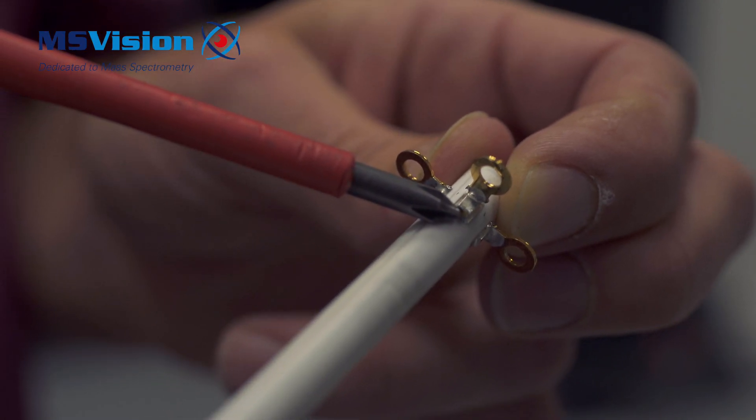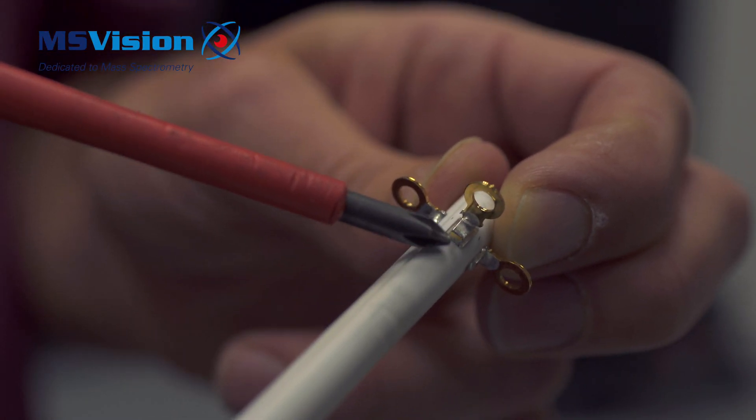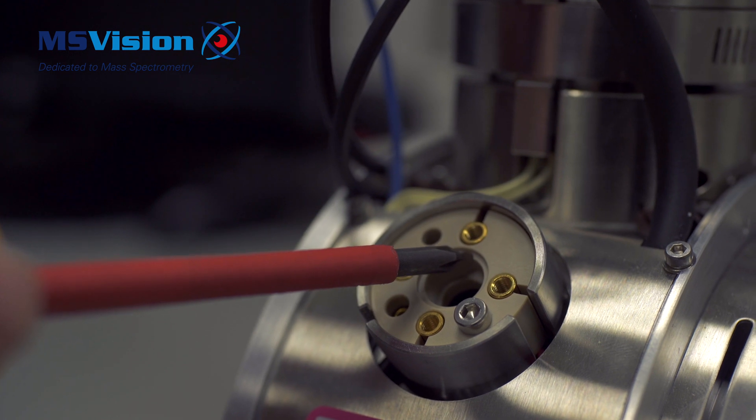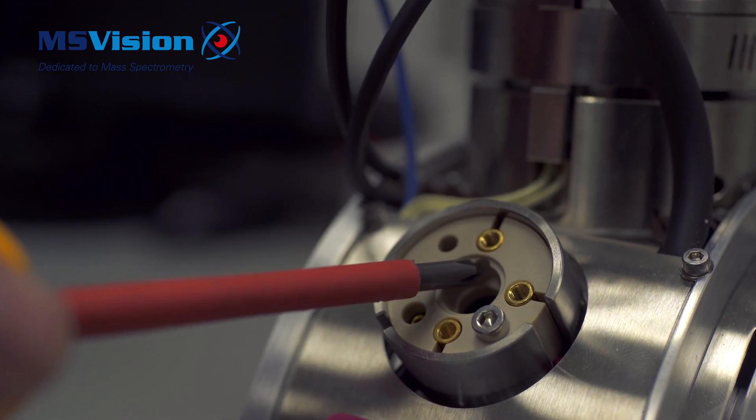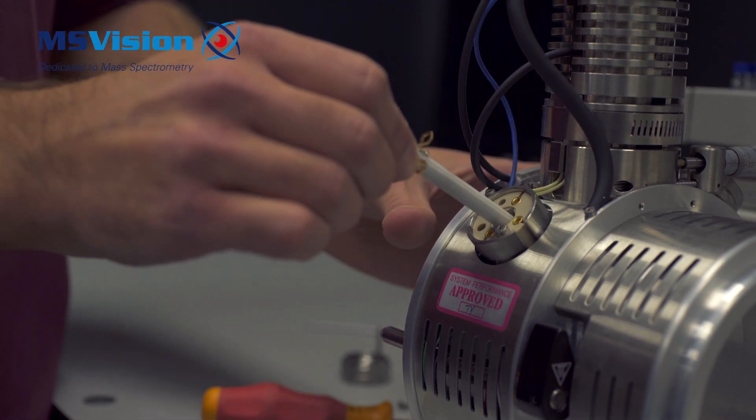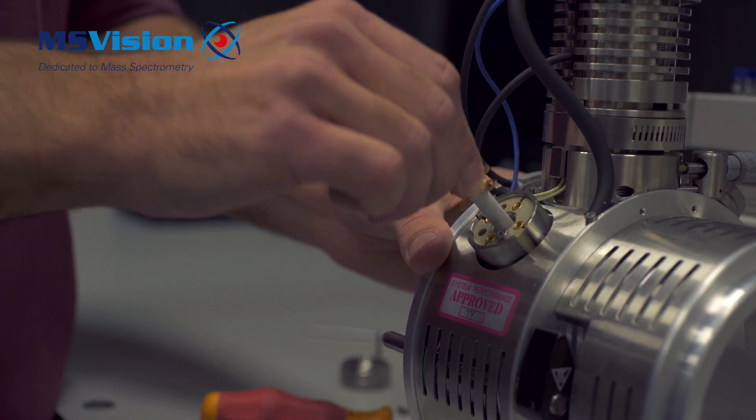Before inserting the new heater, ensure that the notch on the heater holder lines up with the small tab on the heater. Push it in slowly, being careful not to push too hard onto the screw holes as they are fragile.